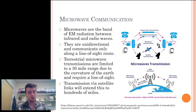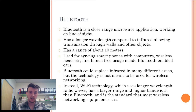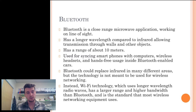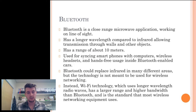Transmission via satellite links will extend this to hundreds of miles. Bluetooth is a close-range microwave application working on a line of sight. It has a longer wavelength compared to infrared, allowing transmission through walls and other objects. Bluetooth has a range of about 10 meters, most commonly used for syncing smartphones with computers, wireless headsets, and hands-free usage inside Bluetooth-enabled cars. Bluetooth could replace infrared in many different areas, but the technology is not meant for wireless networking. Instead, Wi-Fi technology, which uses longer wavelengths of radio waves, has a larger range and higher bandwidth than Bluetooth and is the standard that most wireless networking equipment uses.